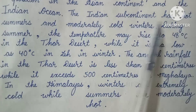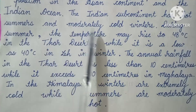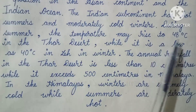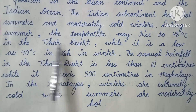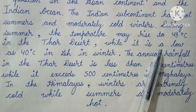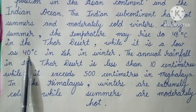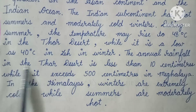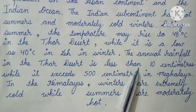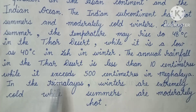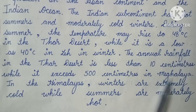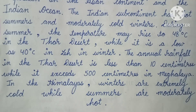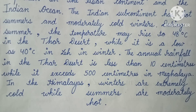The Indian subcontinent has hot summers and moderately cold winters. During summer, the temperature may rise to 48 degrees Celsius in the Thar Desert, while it is as low as 40 degrees Celsius in Leh in winter. The annual rainfall in the Thar Desert is less than 10 centimeters, while it exceeds 500 centimeters in Meghalaya. In the Himalayas, winters are extremely cold while summers are moderately hot.